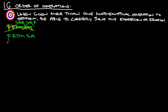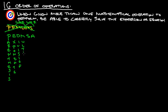I like to use PEDMSA instead — where you do parentheses first, then exponents, then division, then multiplication, then subtraction, then addition. That way will always work.